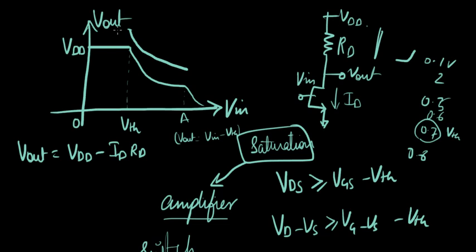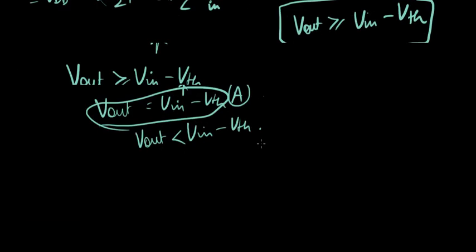And here, the Vout is going to be copying just VDD. So it's not useful. So the useful part of the entire circuit is going to be within these two points, within VTH and A.